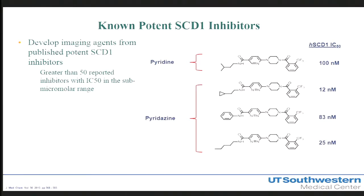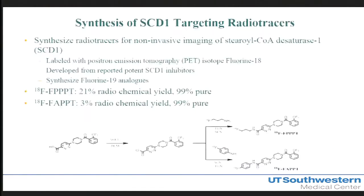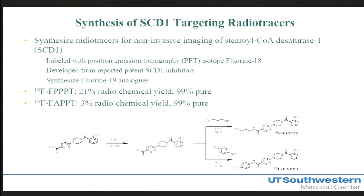Dozens of inhibitors for SCD-1 have been published, many with submicromolar range IC50s. It came down to choosing one I could modify without significantly changing its binding affinity for SCD-1. I ended up choosing a pyrazine scaffold, because the tail group can be altered without drastically affecting affinity — ranging from about 12 to 83 nanomolars. I developed and synthesized two compounds: one containing a fluoropropylamine, called FPPT, and one containing a fluoroaniline, called FAPPT.